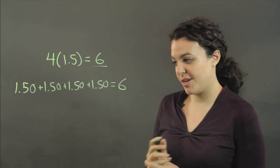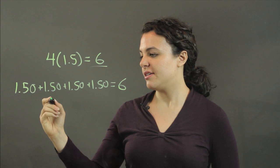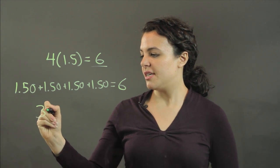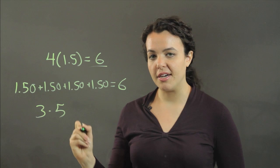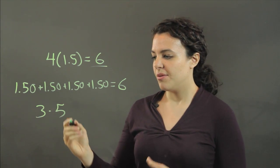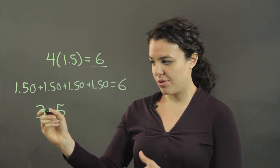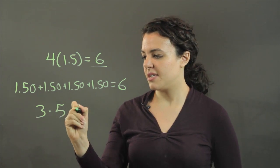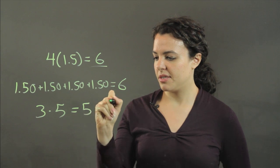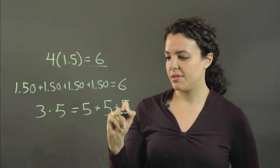Let me give you another example. Let's say I had three times five. This is really five being added three times — it's the same as five plus five plus five.